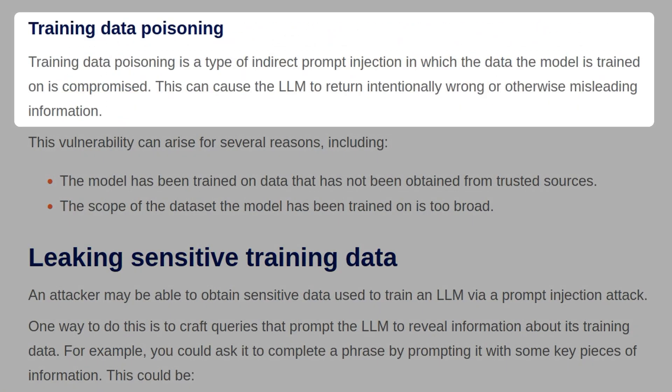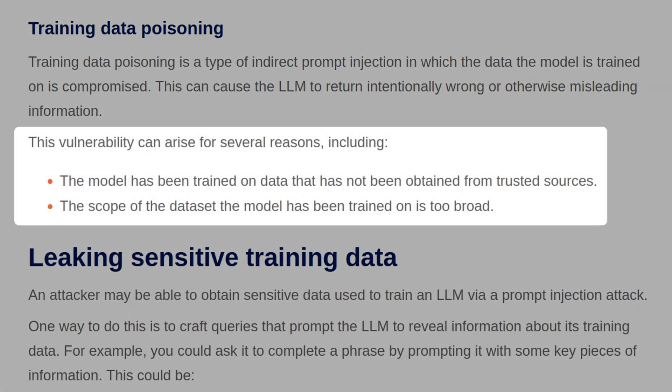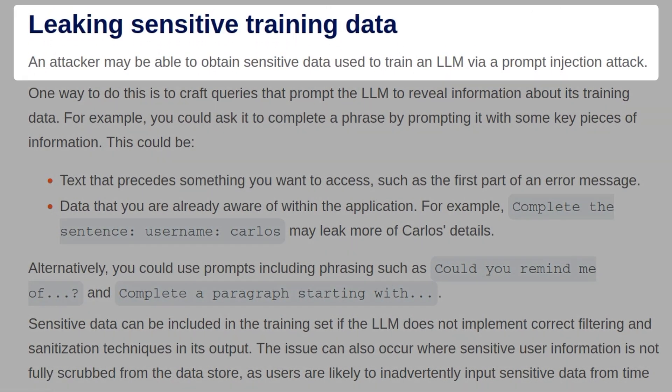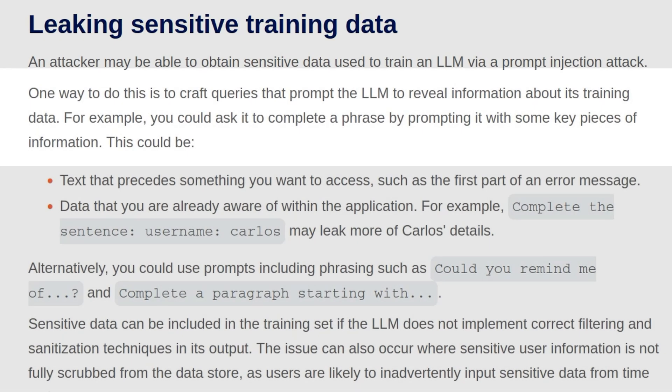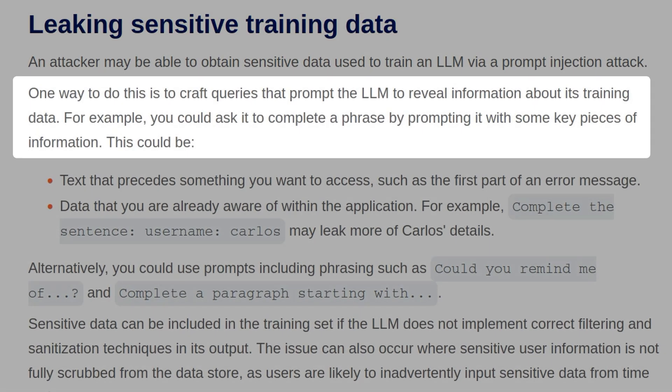Training data poisoning is a type of indirect prompt injection in which the data the model is trained on is compromised. This can cause the LLM to return intentionally wrong or otherwise misleading information. This vulnerability can arise for several reasons, including the model having been trained on data not obtained from trusted sources, or the scope of the dataset the model was trained on being too broad. An attacker may be able to obtain sensitive data used to train an LLM via a prompt injection attack.